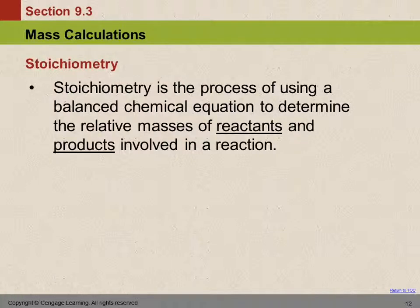Stoichiometry is a process of using a balanced chemical equation to determine the relative masses of reactants and products, and this is a very essential calculation in chemistry. It's also used a great deal in industry—for example, if we want to make five tons of polyethylene, we use the reaction equation to figure out how many tons of reactants we need to get the amount of product we want.